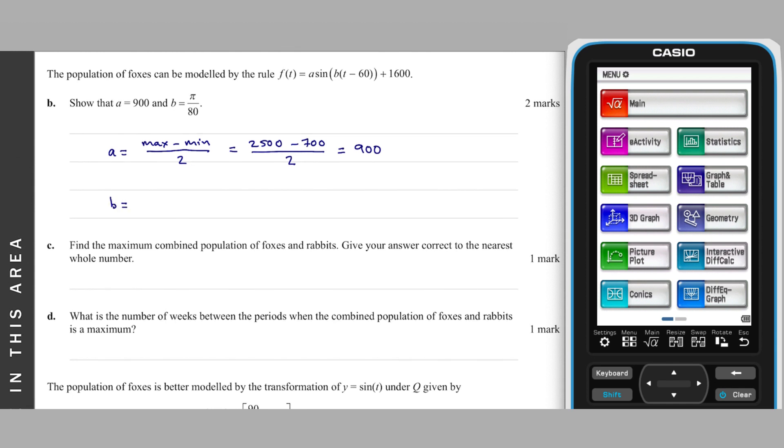Using that handy b equals 2π over period relationship, we get 2π over 160, which simplifies to the b value given.